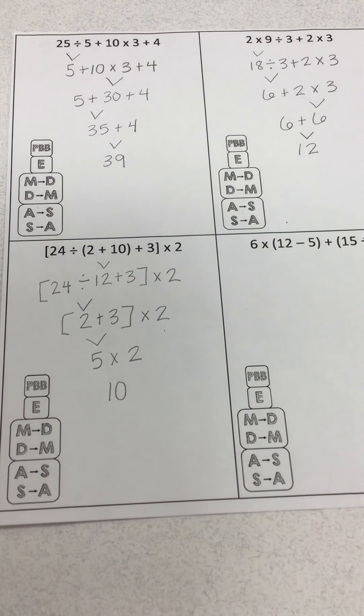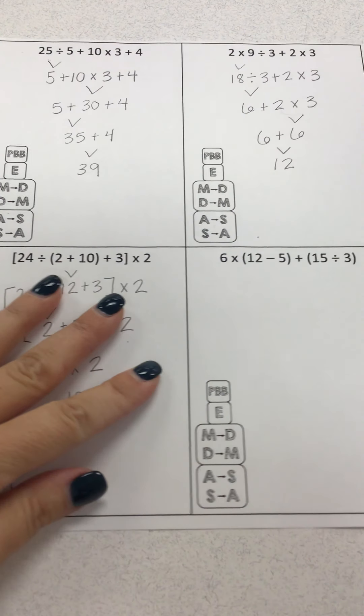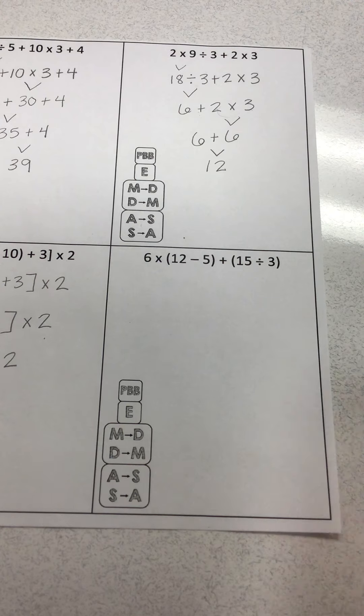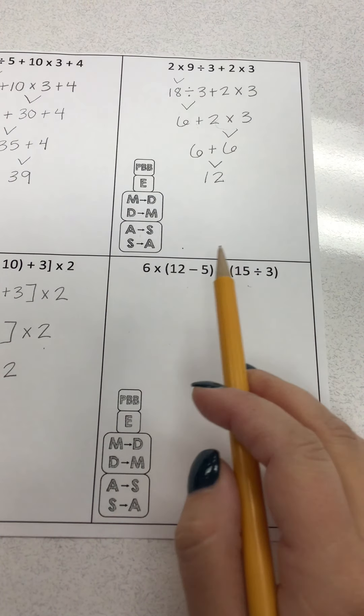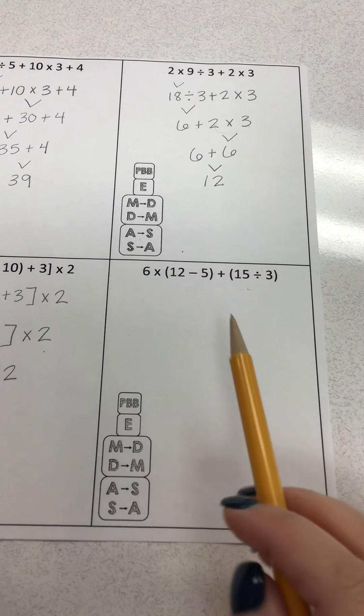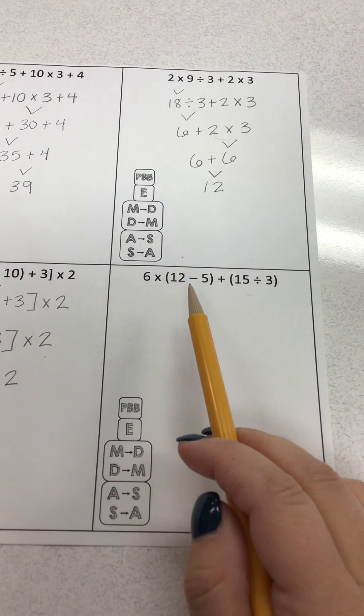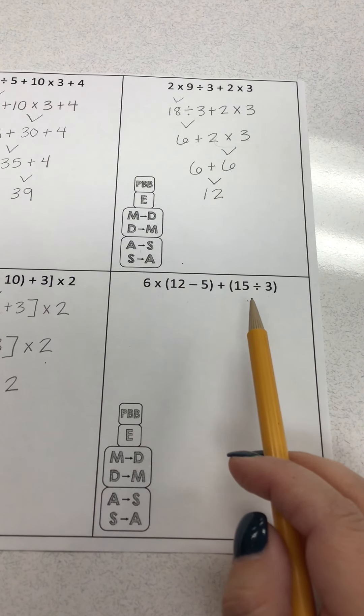It's kind of like a little puzzle. Our last example has two sets of parentheses and a multiplied by 6 and then I add. So I start with my parentheses. I'm going to do this set of parentheses first. Then I'm going to do this set of parentheses.